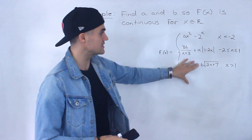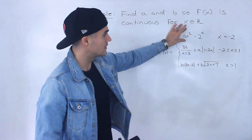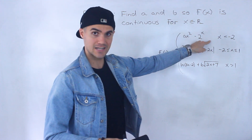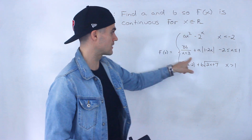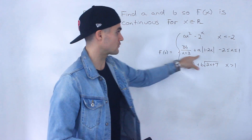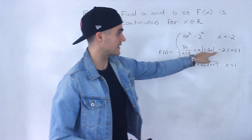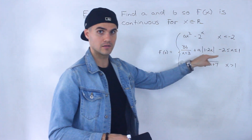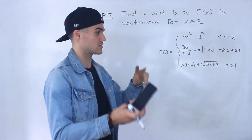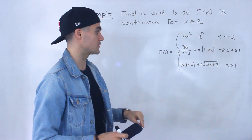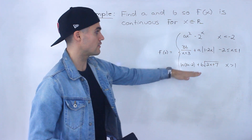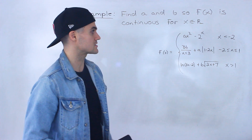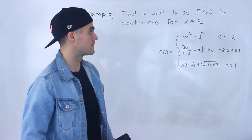Notice we've got three pieces here. This piece when x is less than negative 2, this piece over here when x is between negative 2 and 1 inclusive of both of those, and then this piece here when x is greater than 1.